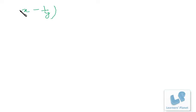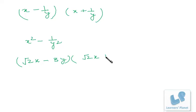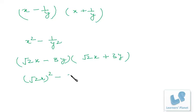Similarly, (x - 1/y)(x + 1/y) is in (a-b)(a+b) format, giving x² - 1/y². Also, (√2·x - 3y)(√2·x + 3y) is the same format, giving (√2·x)² - (3y)² = 2x² - 9y².